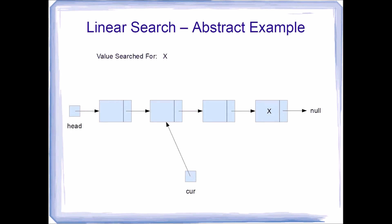So now, cur is not null, and the node doesn't contain X, so advance cur. Continue this process. Cur is not pointing to null, and now the node pointed to by cur contains X, so the algorithm terminates and we return 'found'.